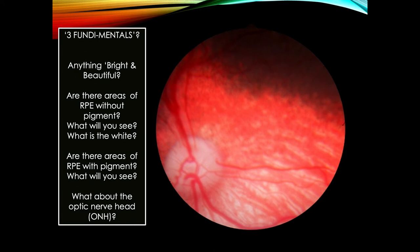Next one: anything bright and beautiful? Beautiful down here. Anything bright or shiny? No — I would agree. Any pathology associated with the absence of tapetum? No pathology — all normal. Are there areas of the RPE without pigment — what will you see? If the RPE has pigment in it, what color is it going to be?